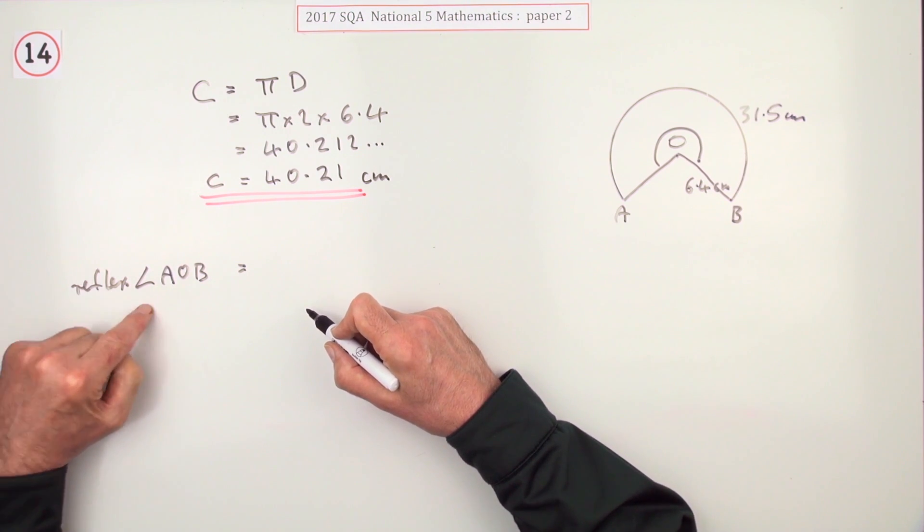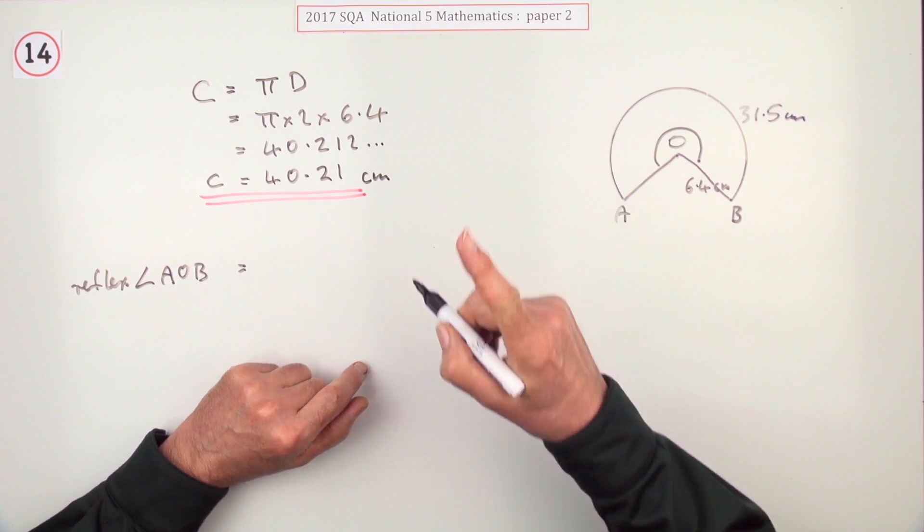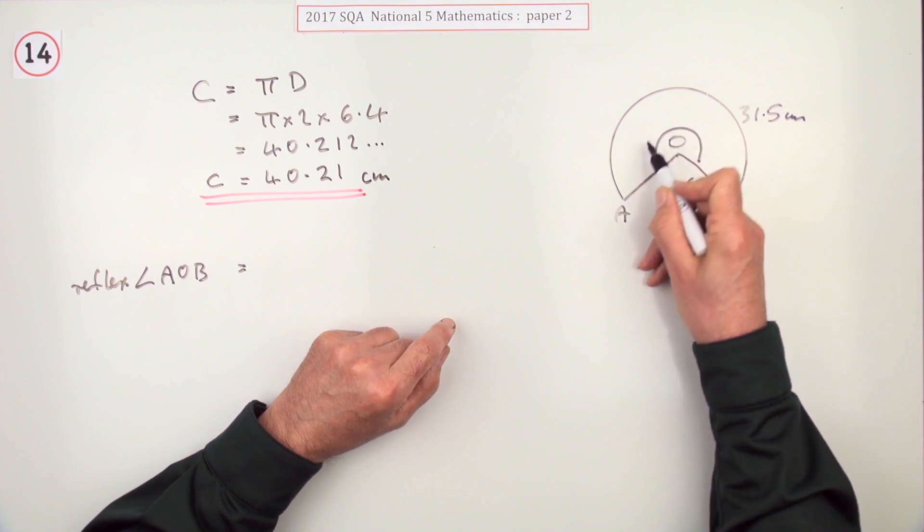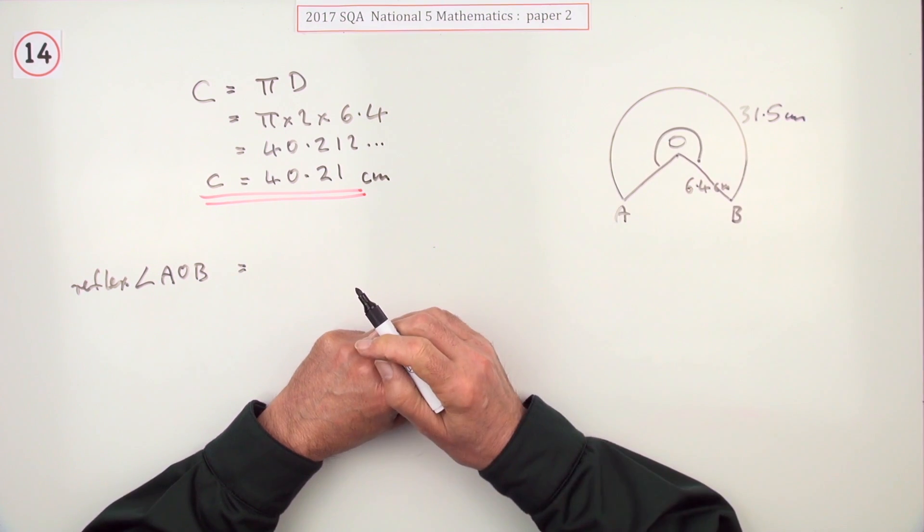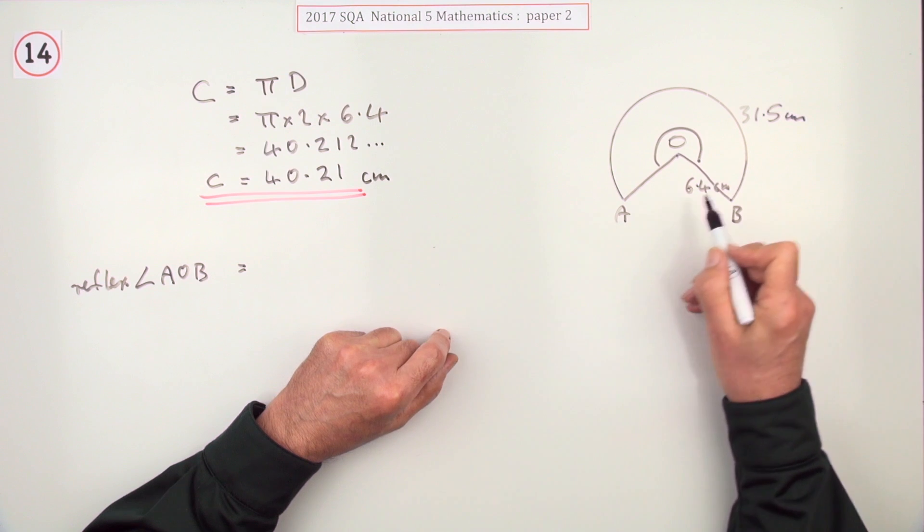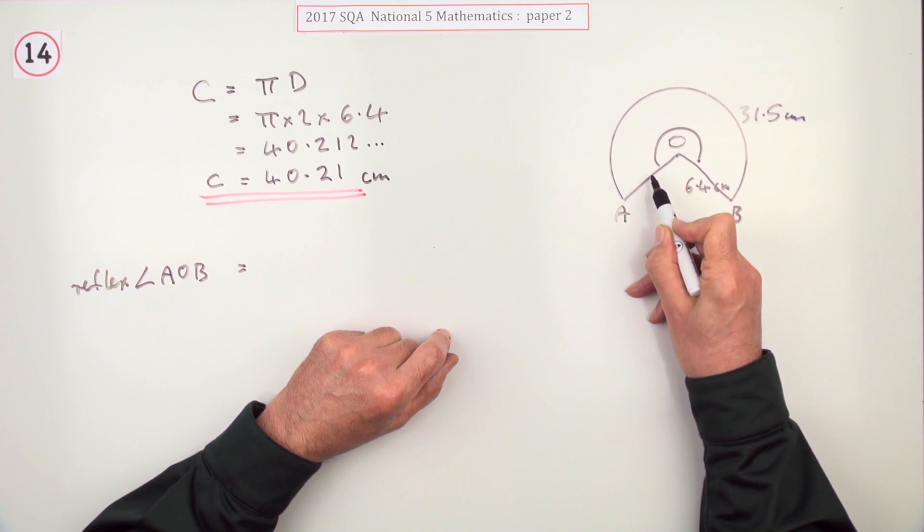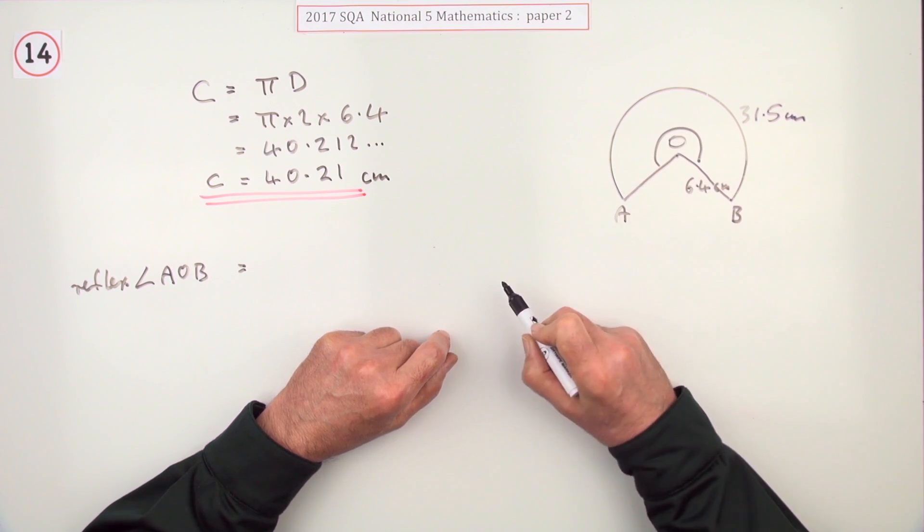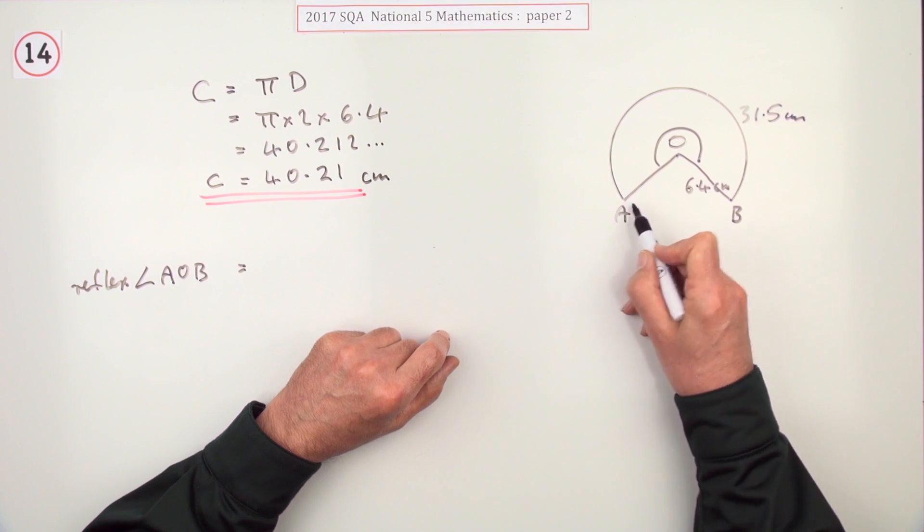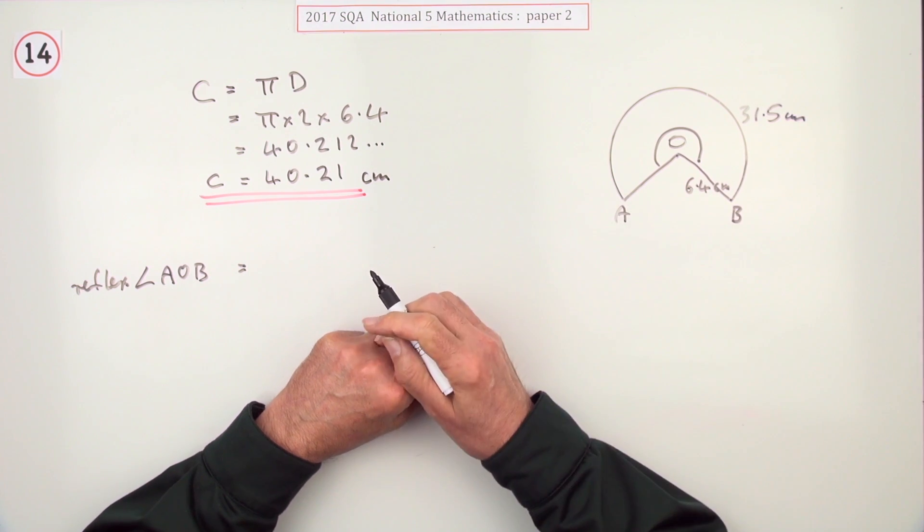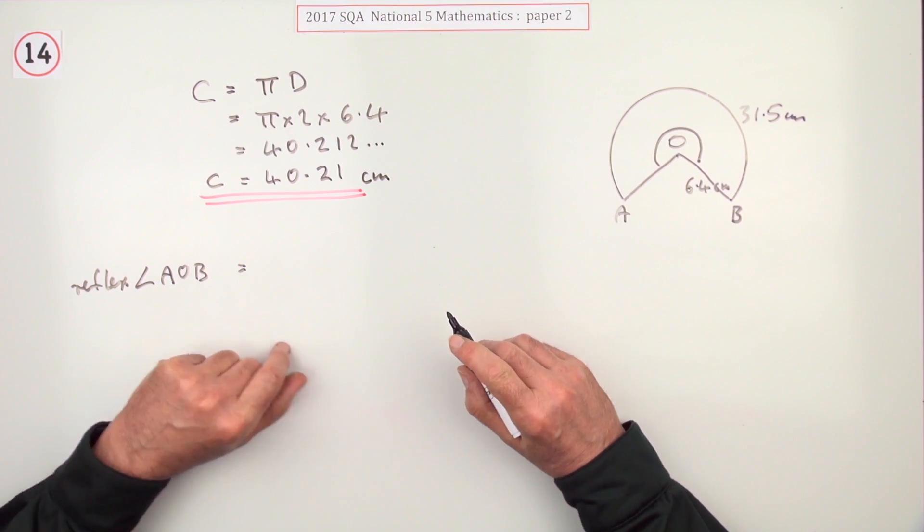So it's safer to put reflex AOB. If you're interested, that convention is to take the positive direction as anti-clockwise. So if you say angle BOA it means you're going around this way, whereas angle AOB would have been going that way. But don't let that bother you, just put reflex angle.